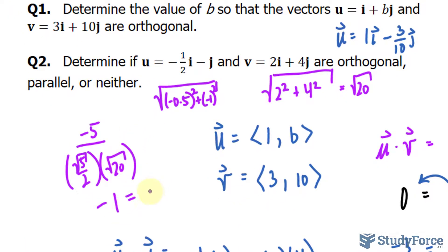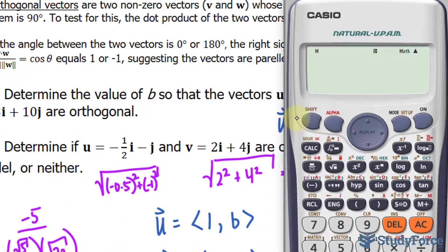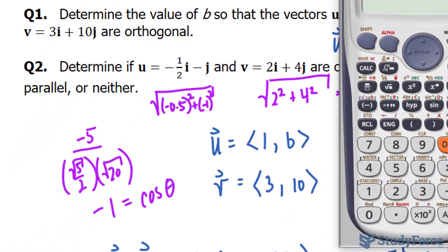So negative 1 is equal to cosine theta. And if I were to use my calculator and use the inverse cosine function for the ratio negative 1, I end up with 180 degrees.